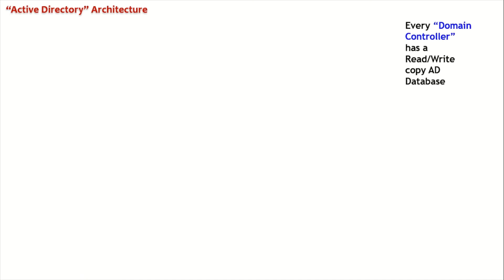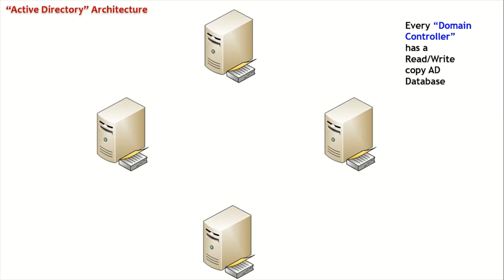Let us dive into the architecture of Active Directory. Every domain controller has a read-write copy of the Active Directory database. This is different from Windows NT, where only the primary domain controller had a read-write copy. In Active Directory, every domain controller has a read-write copy, so as an administrator, you can make changes — such as creation, deletion, modification, or movement of an object — on any domain controller.